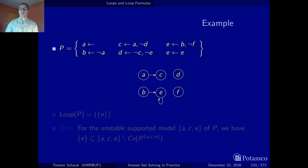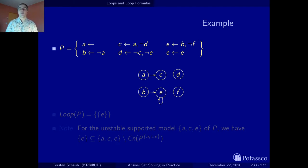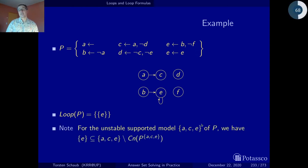Consider our running example with the self-referential rule E if E. This rule induces a self-loop — an arc from E to E — and the node E along with this self-loop constitutes a strongly connected subgraph. Hence, the singleton set containing E is a loop, and it's the only loop in this example. Let's look at the unstable supported model and what we see with this loop.